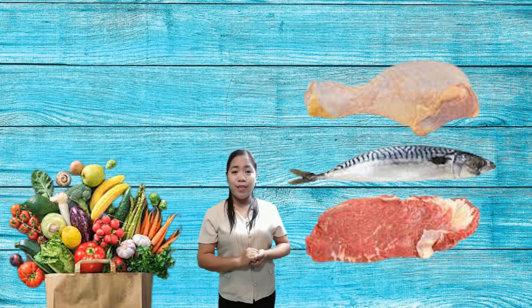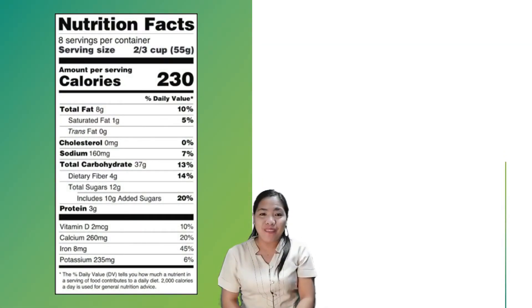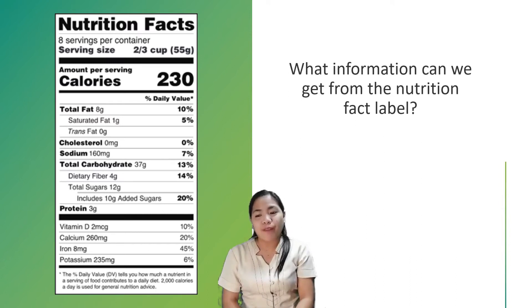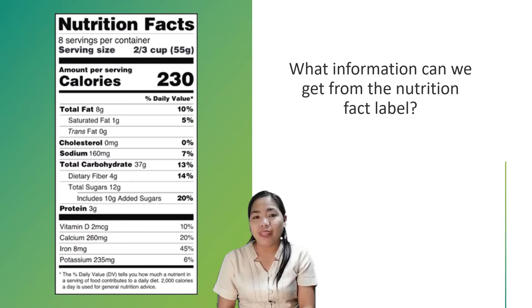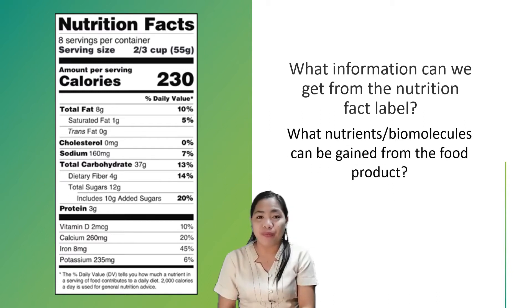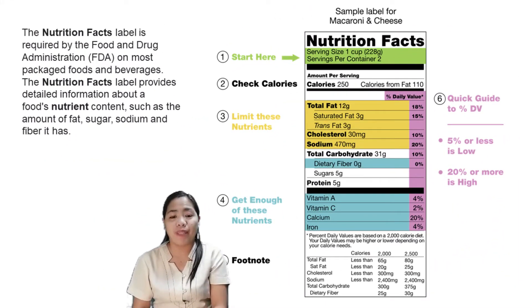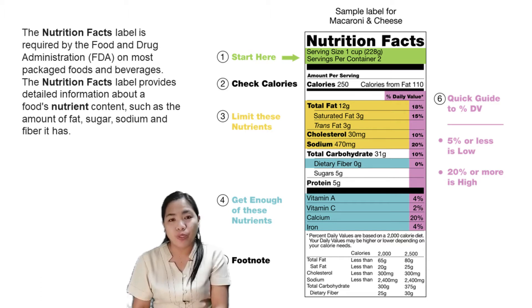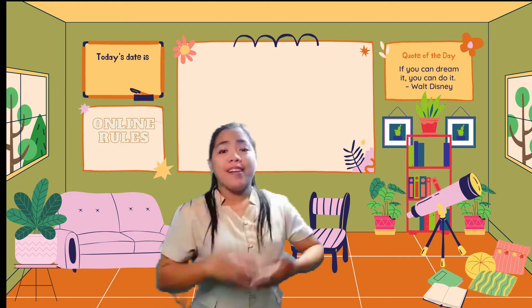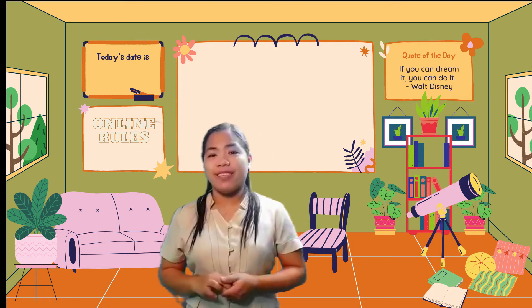How about vegetables? Look at the image. Have you seen one of these? What information can we get from the Nutrition Fact Label? What nutrients or biomolecules can be gained from the food product? The Nutrition Fact Label is required by the Food and Drug Administration on most packaged food and beverages. It provides detailed information about a food's nutrient content, such as the amount of fat, sugar, sodium, and fiber it has. Let's discover which nutrients — fats, proteins, and carbohydrates — are found in different foods.